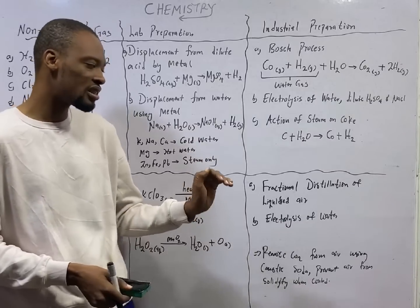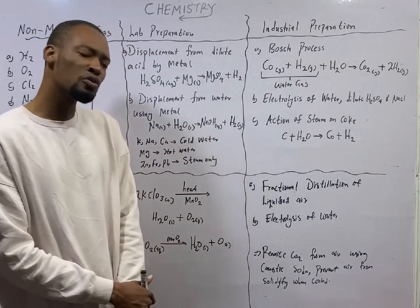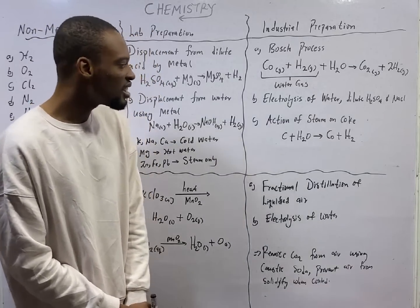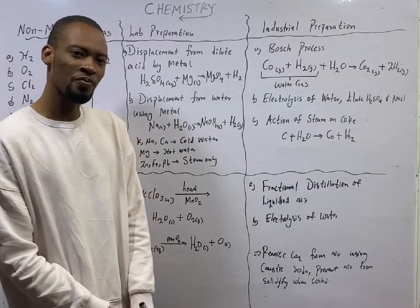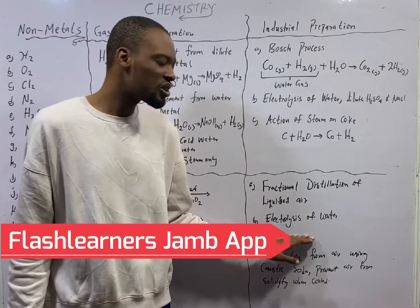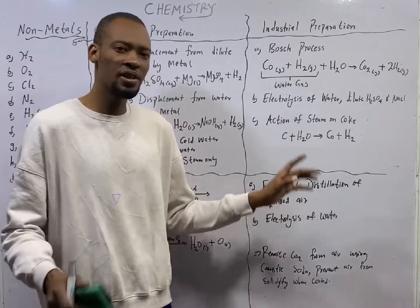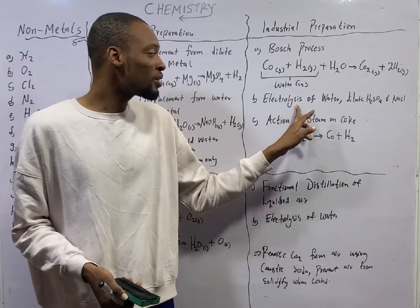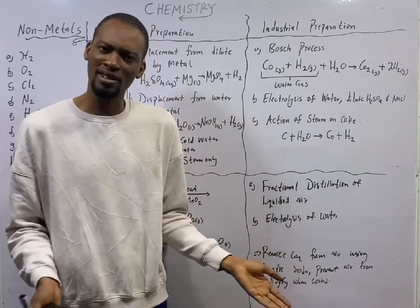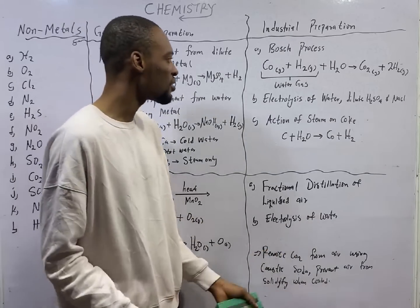And the second way to get oxygen gas or to prepare oxygen gas in the industry is electrolysis of water. Which means that we can get both oxygen and hydrogen in the industry using electrolysis of water. There are the various products. Hydrogen ion will be the product at the cathode. Oxygen ion will likely be the product at the anode. So electrolysis of water is giving us these two gases.